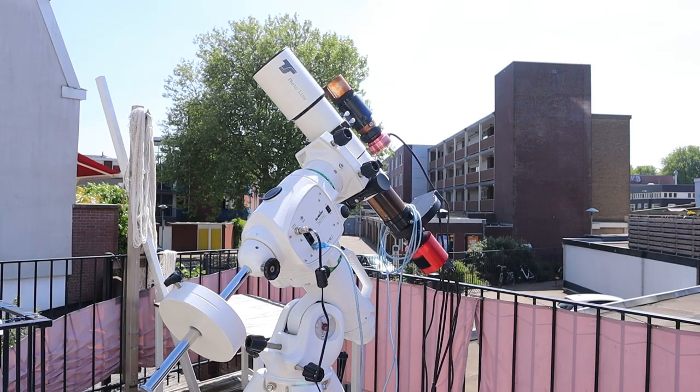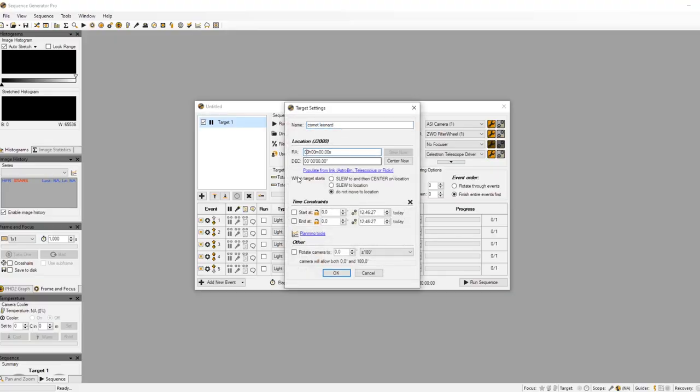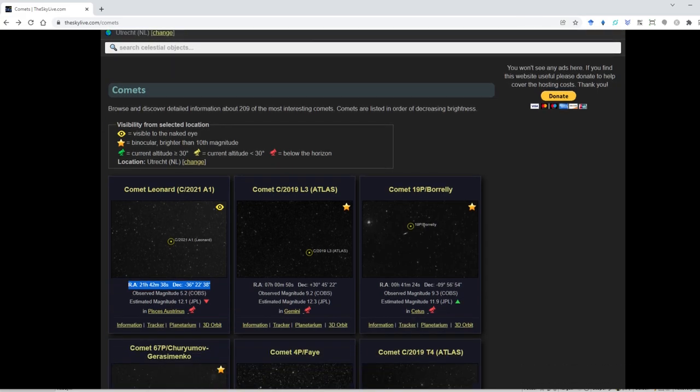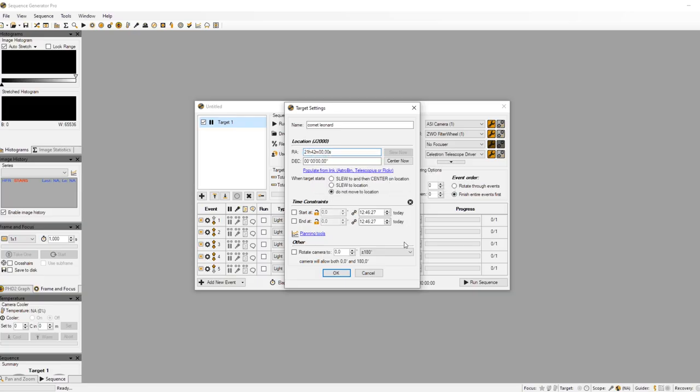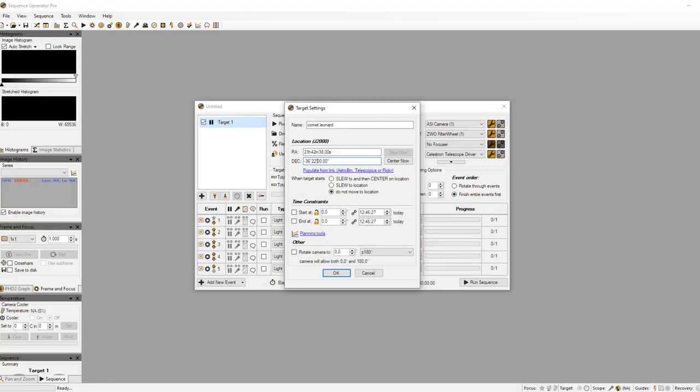I personally use a software program called Sequence Generator Pro, with which I can control my equatorial mount from my laptop and PC using ASCOM and plate solving. I've made separate videos and blogs on how to use various equatorial mounts, as well as software programs such as Sequence Generator Pro, and you can find links in the video description below.